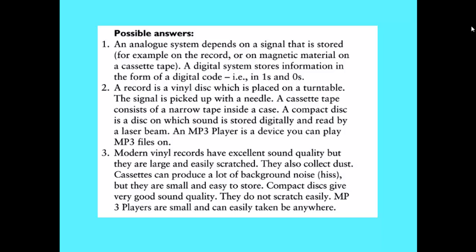Number two: what are the differences between the ways of listening to recorded music? A record is a vinyl disc which is placed on a turntable; the signal is picked up with a needle. A cassette tape consists of a narrow tape inside a case. A compact disc is a disc on which sound is stored digitally and read by a laser beam. An MP3 player is a device you can play MP3 files on.